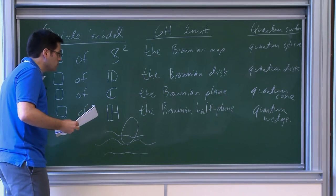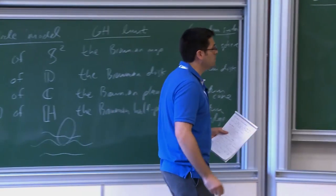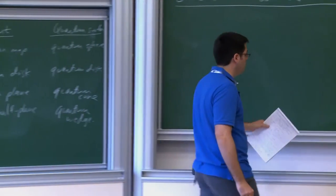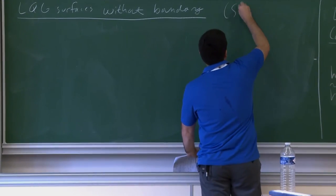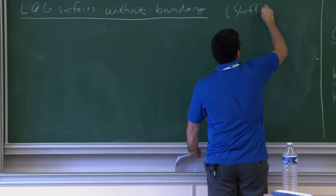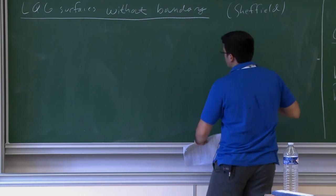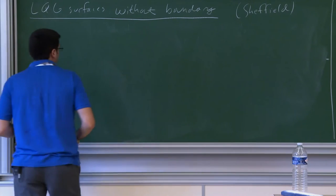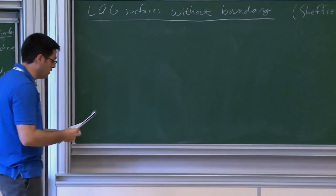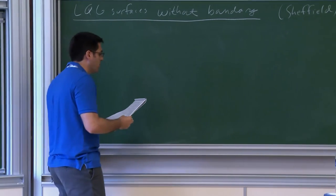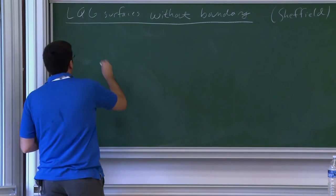Let me now give the construction of the LQG surfaces without boundaries. I'll do the quantum cone and quantum sphere; the quantum wedge construction is almost exactly the same, and the quantum disk is obtained from the wedge the same way the sphere is obtained from the cone. These constructions are described in a paper by Scott Sheffield on SLE on Liouville quantum gravity.